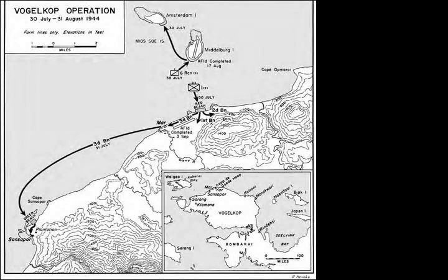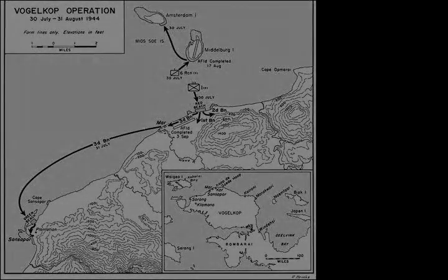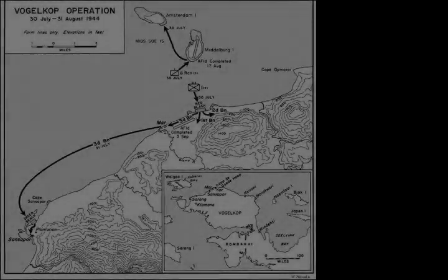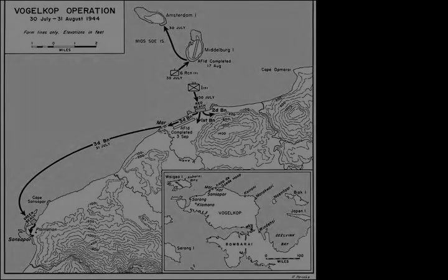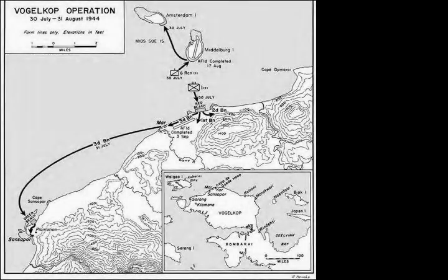Total battle casualties for the Typhoon Task Force from 30 July through 31 August were 14 killed, 35 wounded, and 9 injured. Japanese losses during the same period were estimated to be 385 killed and 215 captured.